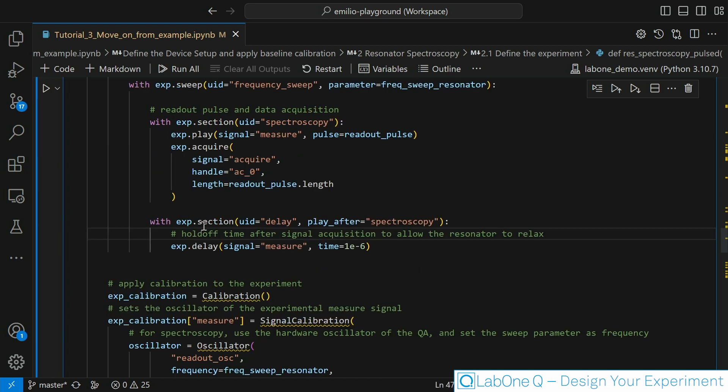We are calling one last section called delay. As you can see we play specifically after spectroscopy using the play after flag. Here we are just waiting for some time, in this case one microsecond. This is done to allow the resonator to reach again its ground state before we are repeating the RF pulse again.